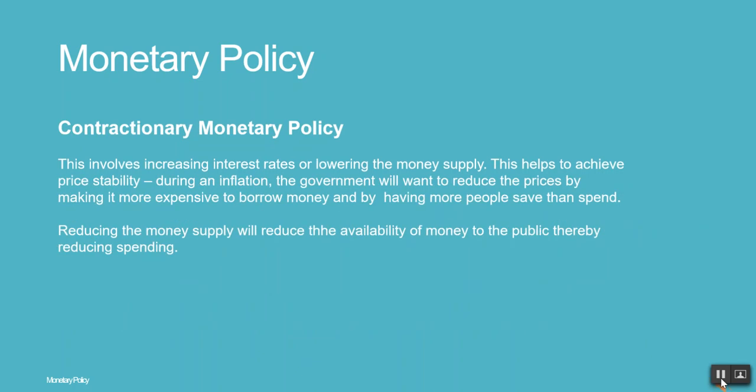Contractionary Monetary Policy involves increasing interest rates or lowering the money supply. This helps to achieve price stability during inflation. The government will want to reduce prices by making it more expensive to borrow money and by having more people save than spend. Reducing the money supply will reduce the availability of money to the public, thereby reducing spending.